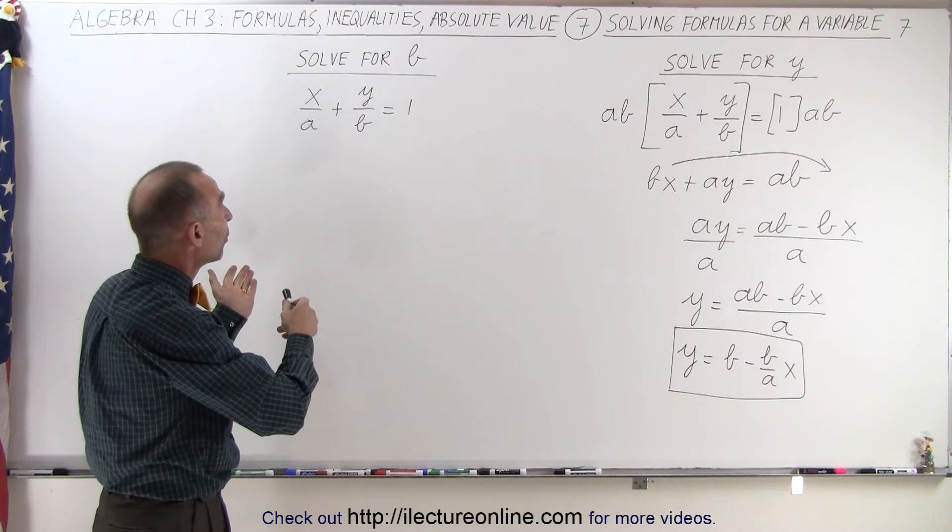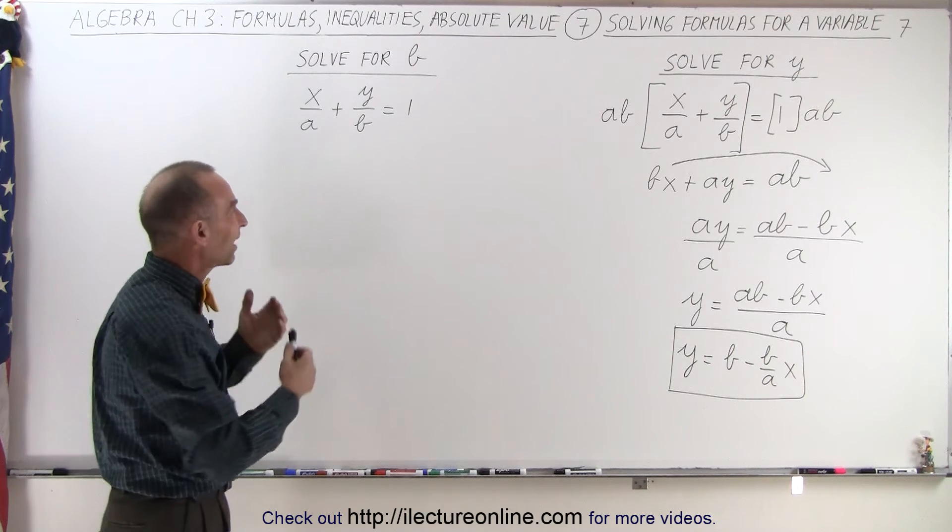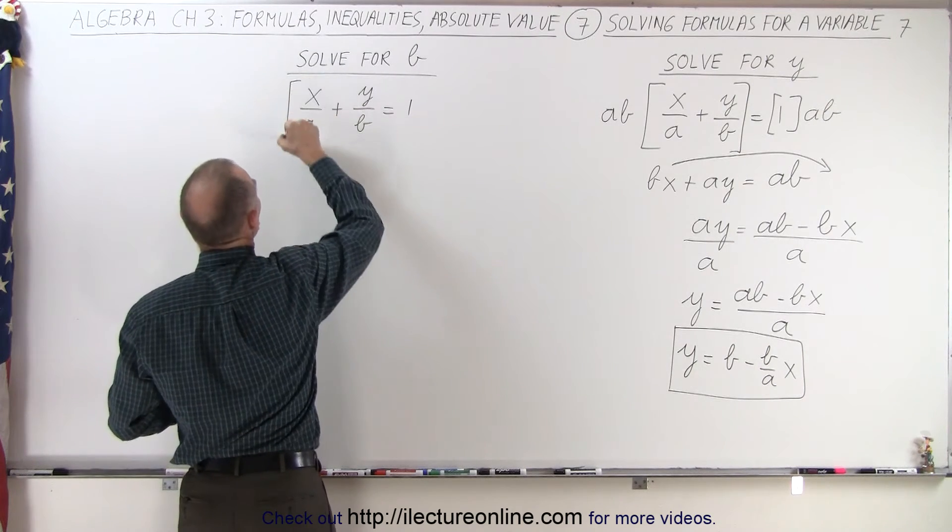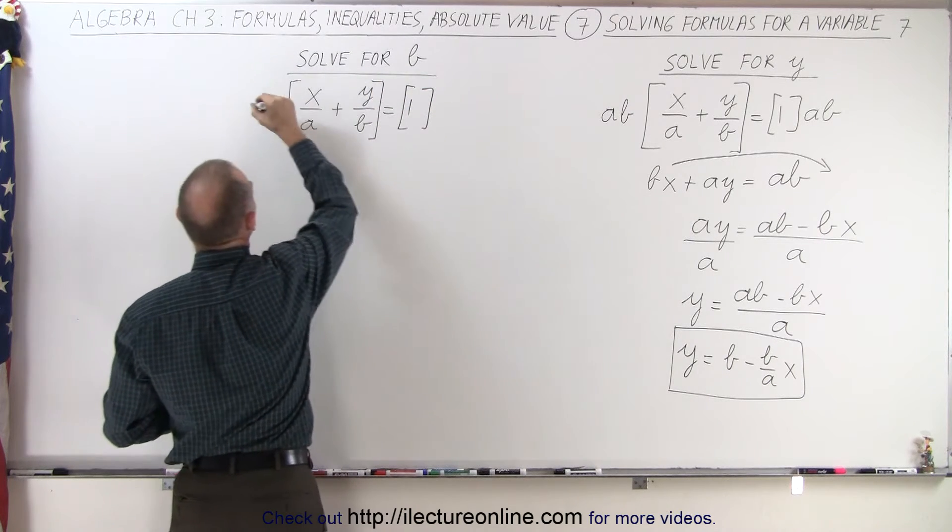On the second case, we now want to solve this for b. Notice we're going to start out doing exactly the same thing, getting rid of fractions. So I'm going to multiply both the left and the right side by a times b.